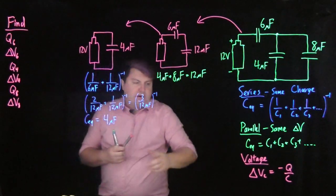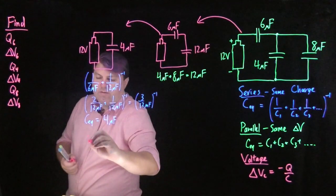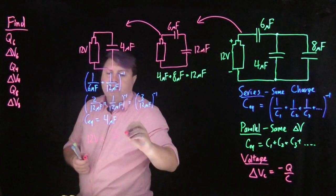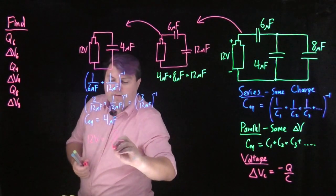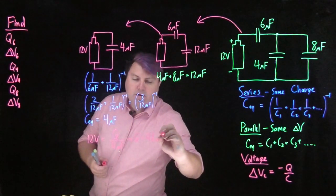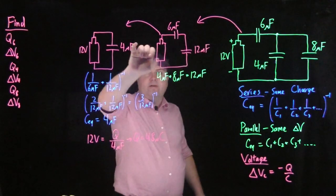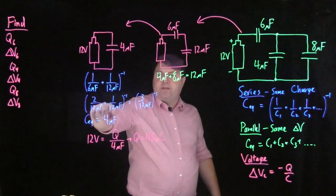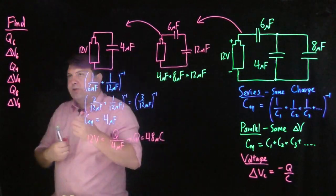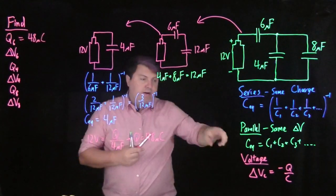If I do that, then I can use my voltage rule. I know that whatever I go up the battery, I have to go down this one, so I have 12 volts equals the charge on our plates over the capacitance, 4 microfarads. This gives me the charge is 48 microcoulombs.